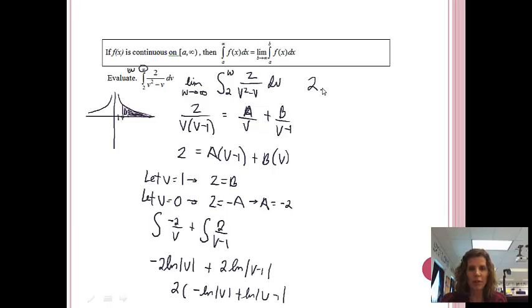When I go to rewrite that, that's going to be 2 natural log, since this one is the subtraction, it's going to be division, but that one will be on the bottom. So it will be v minus 1 over v. That's the integral. And so now I get to evaluate it at w and at 2.